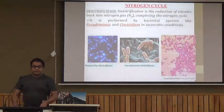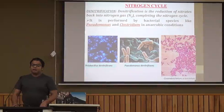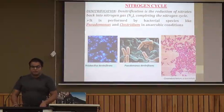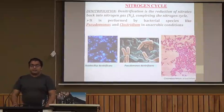Next is denitrification. In denitrification, nitrates are reduced back into nitrogen gas, thus completing the nitrogen cycle — nitrogen is taken from the atmosphere and given back to it. It is performed by bacterial species like Pseudomonas and Clostridium, and requires anaerobic conditions.